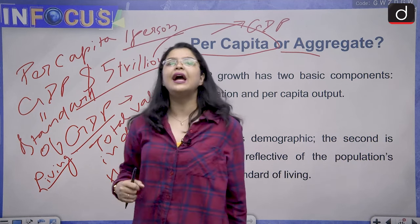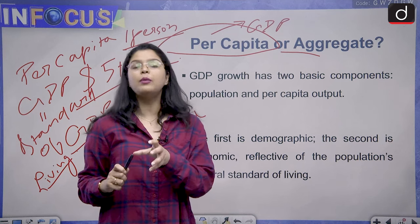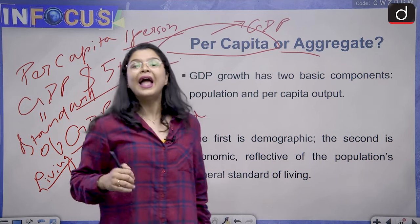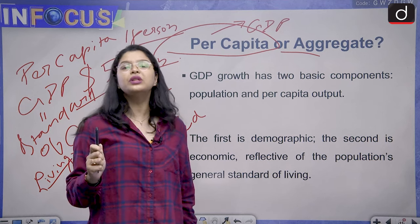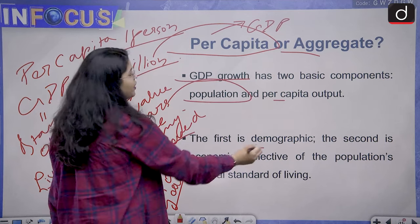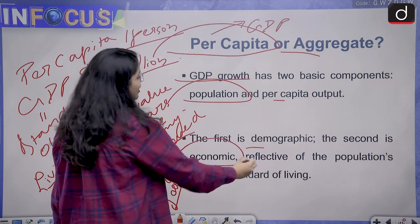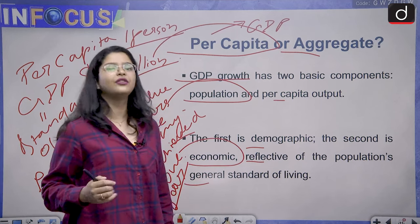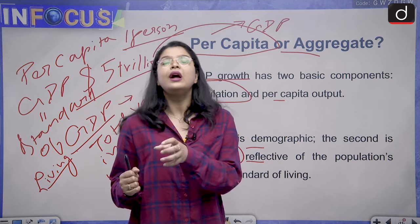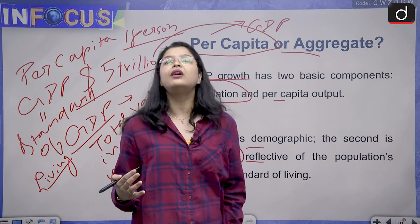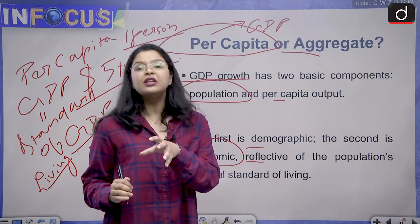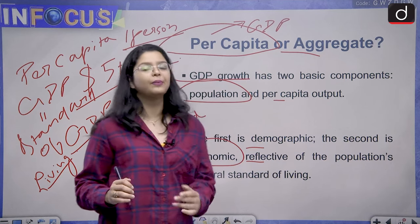The point is, are we actually increasing the per capita GDP? Are we seeing an increase in the actual income of just one person in the population? That is why India needs to pay attention to per capita GDP. GDP growth has two basic components: population and per capita output. The first is demographic; the second is economic, reflective of the population's general standard of living. Whenever India talks about climate change and the need to decrease use of fossil fuels, we are not agreeing to completely stop because we are still a developing nation — we need fossil fuels to increase the standard of living of the people. With a per capita GDP of hardly $2,500, India's focus should be on boosting investment, jobs, and incomes.